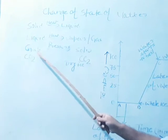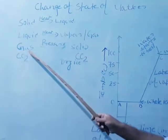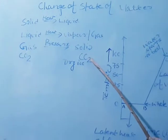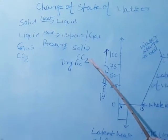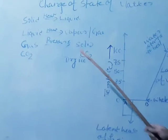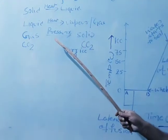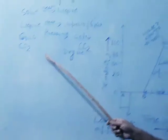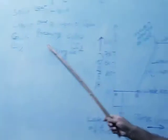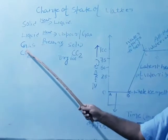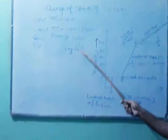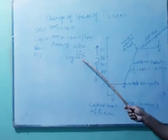Carbon dioxide gas can be converted into solid carbon dioxide, which we often call dry ice. This is done by changing both the temperature and the pressure, and then the gaseous carbon dioxide is converted into solid carbon dioxide.